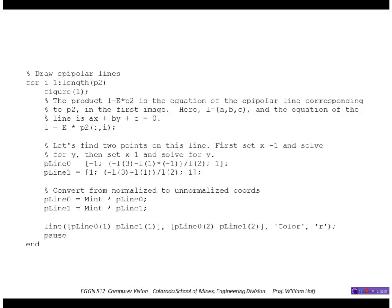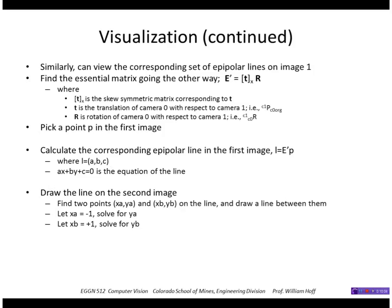So if you run that, well, first, before I run that, I'm going to show if I wanted to draw the epipolar lines in the other image, I can form the essential matrix going the other way. In this case, it's the translation of camera 0 with respect to camera 1, and R is the rotation of camera 0 with respect to camera 1. So I create the epipolar line going the other way, and then I can draw the epipolar line in the first image corresponding to the point in the second image. So, let me go ahead and run that.